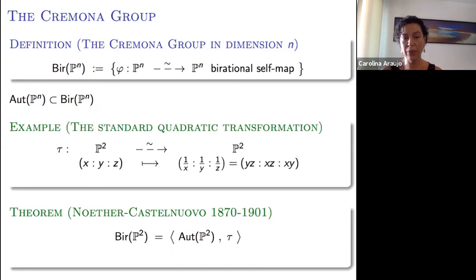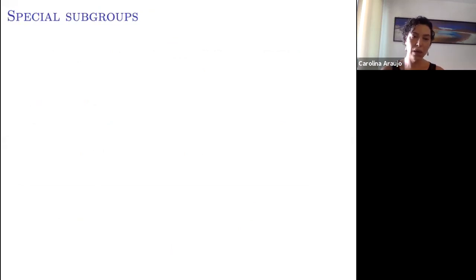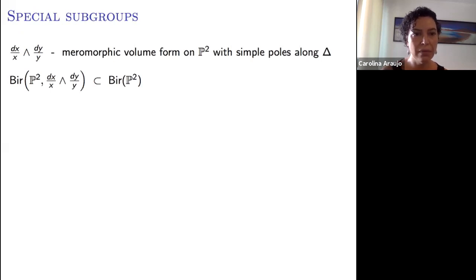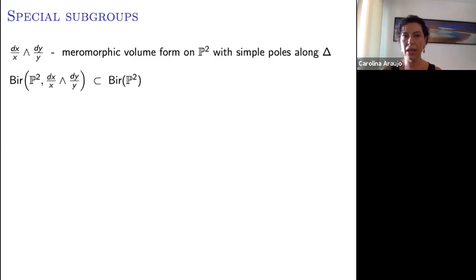The simplest example of a non-biregular Cremona transformation is the standard quadratic transformation in P^2: it is undefined precisely at the coordinate points, contracts the coordinate lines to the opposite coordinate points, and is an isomorphism elsewhere. The classical theorem of Noether–Castelnuovo says that in dimension two, these suffice to generate the whole group — linear automorphisms together with this one standard quadratic transformation generate all birational self-maps of P^2.